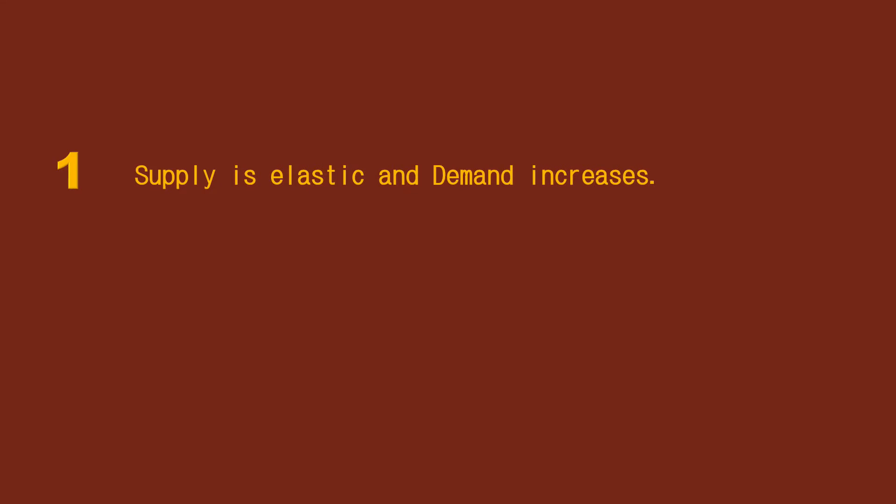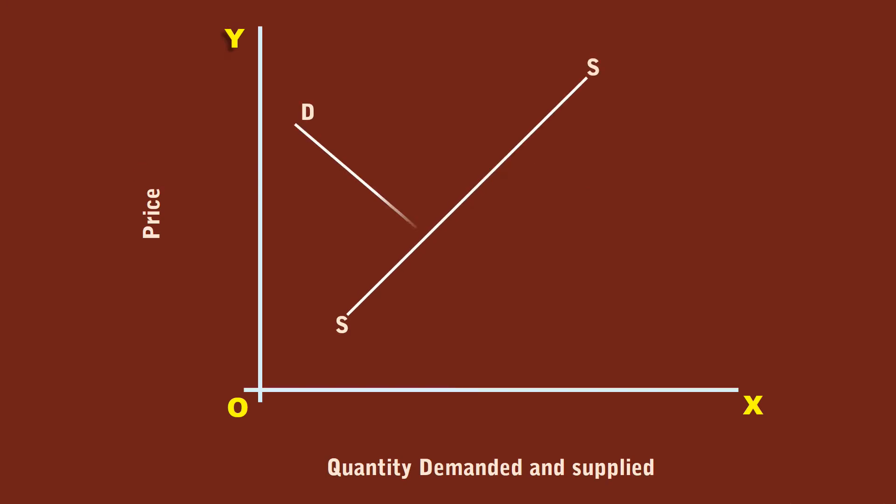Case 1: Supply is elastic and demand increases. To begin with, the market is in equilibrium at E1, where demand curve DD cuts the supply curve SS. The price is P1 and the quantity is M1.